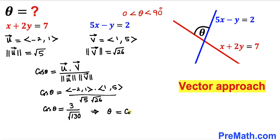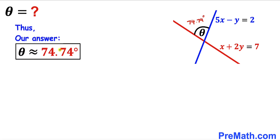So therefore angle theta is going to be equal to cosine inverse of 3 divided by the square root of 130. Using a scientific calculator, our angle theta is approximately equal to 74.74 degrees. So our angle theta turns out to be approximately 74.74 degrees — and that's our final answer. Thanks for watching and please don't forget to subscribe to my channel for more exciting videos.